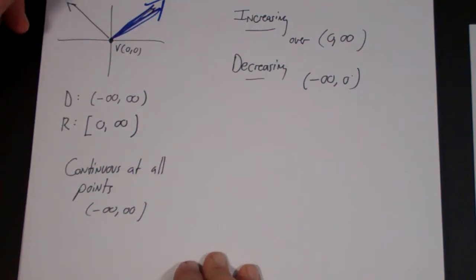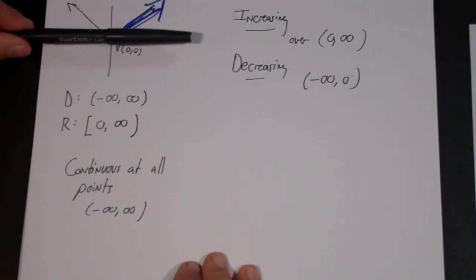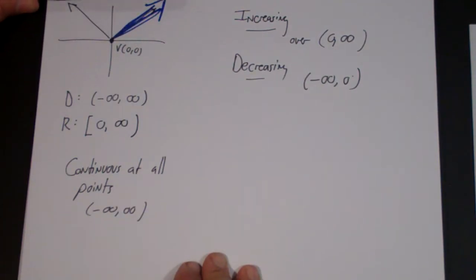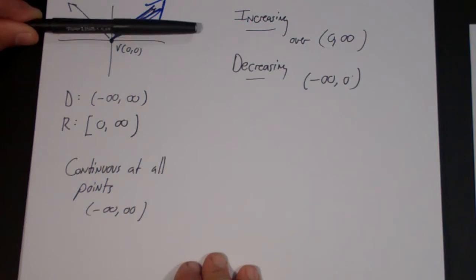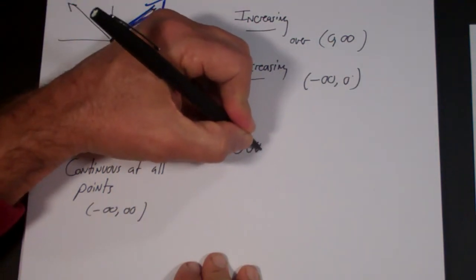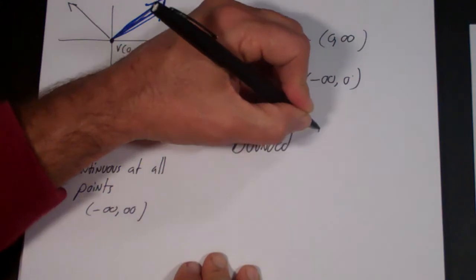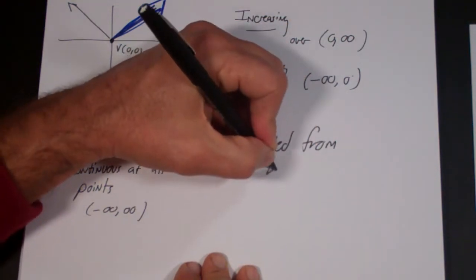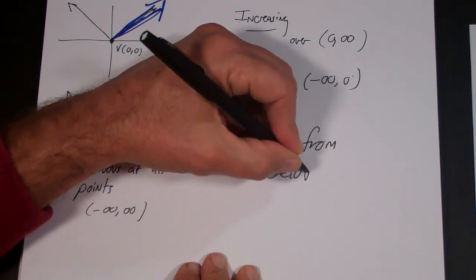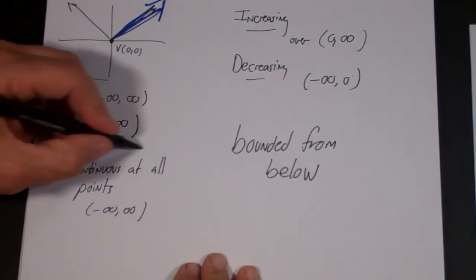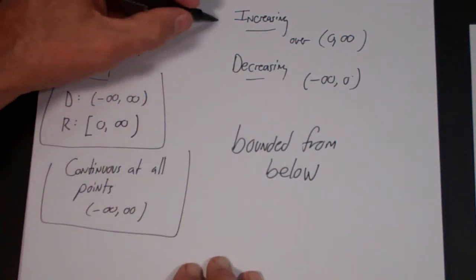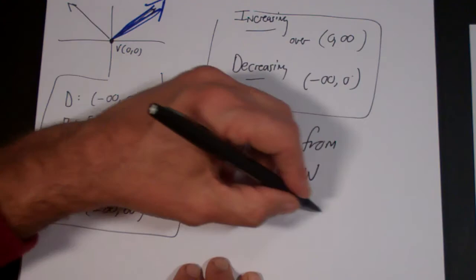And the last one is boundedness. The question is, is it bounded from above or below? Well, there is no limit to how large y can be. But y is never lower than 0. So we say it is bounded from below. And those are your first four properties: domain and range, continuity, increasing and decreasing, and boundedness.